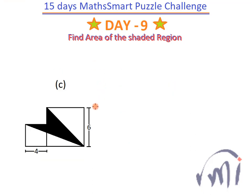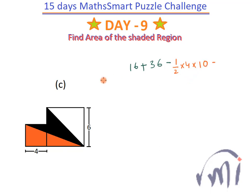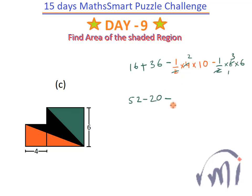Now the third problem: find the area of the black shaded region. The area equals the sum of the two squares — 4 × 4 = 16 and 6 × 6 = 36 — minus the area of two triangles: (1/2) × 4 × 10 and (1/2) × 6 × 6. So: 16 + 36 − 20 − 18 = 52 − 38 = 14 square units.